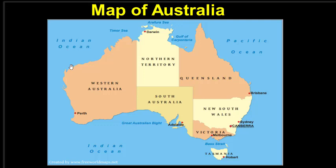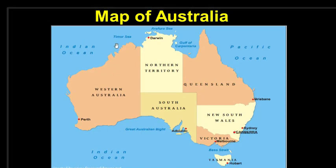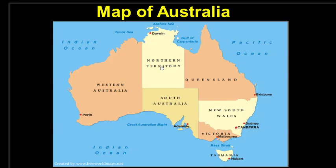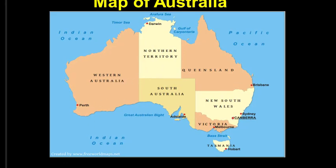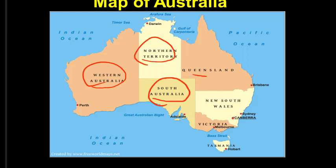Hello everyone, welcome to the Practical Series of AI. Today we will be solving a Constraint Satisfaction Problem, which is widely dealt with in many problems. We will solve this problem using map coloring. Here we have the map of Australia, which has seven states: Western Australia, Northern Territory, South Australia, Queensland, New South Wales, Victoria, and Tasmania.